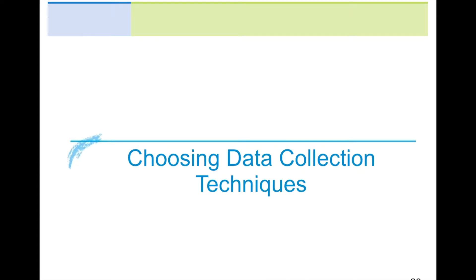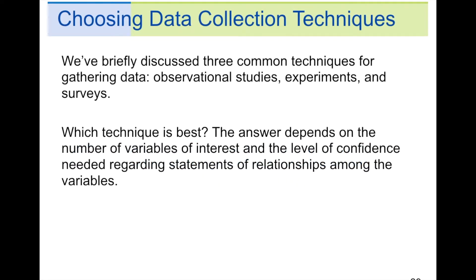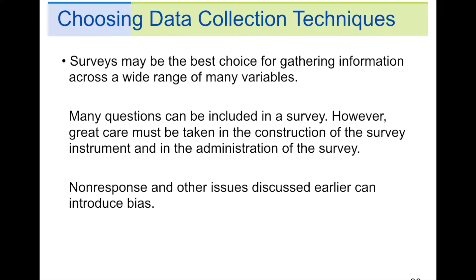Choosing data collection techniques. We briefly discussed three common techniques for gathering data: observational studies, experiments, and surveys. Which technique is the best? The answer depends on number of variables of interest and the level of confidence needed regarding statements of relationships among the variables. Surveys may be the best for gathering information across a wide range of many variables. Many questions can be included in a survey, however great care must be taken in the construction of the survey instrument and in the administration of the survey. Non-response and other issues discussed earlier can introduce bias. So if you create a survey, you can get a lot of information about topics using a survey, however you've got to be very specific and very careful about how you create the survey.